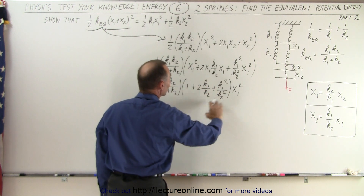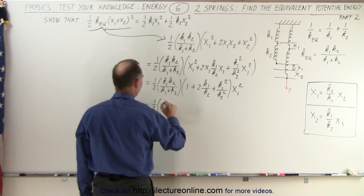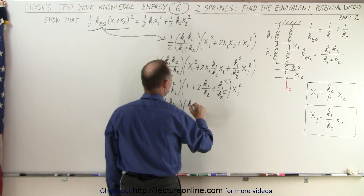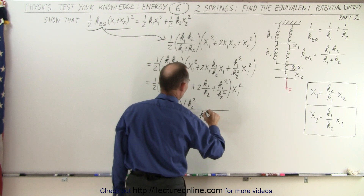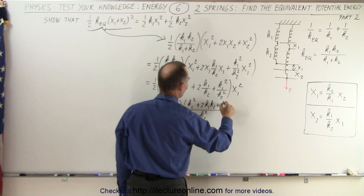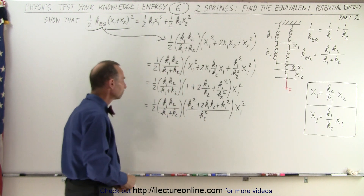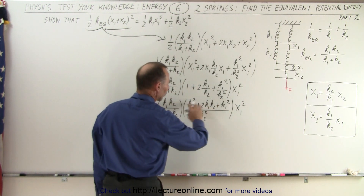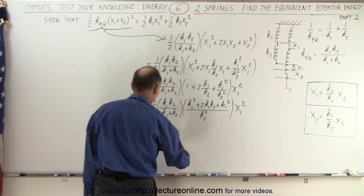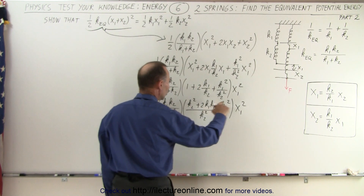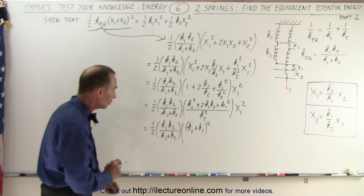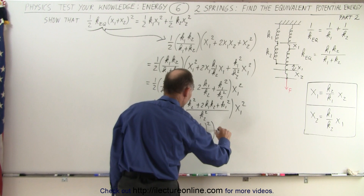We write everything over the common denominator k2 squared. So this equals one-half times k1k2 over (k1 plus k2) times the quantity k2 squared over k2 squared plus 2k1k2 plus k1 squared, all times x1 squared. Looking at the numerator, k2 squared plus 2k1k2 plus k1 squared is a perfect square, so it can be written as (k2 plus k1) squared over k2 squared, times x1 squared.